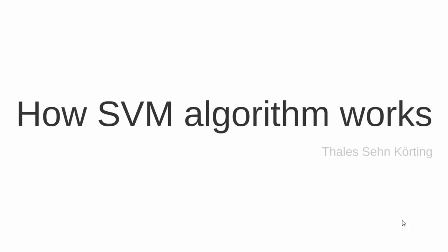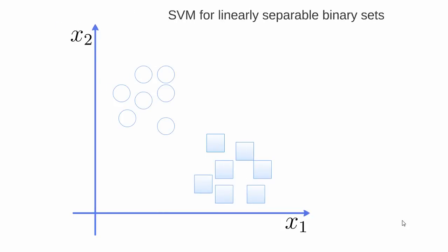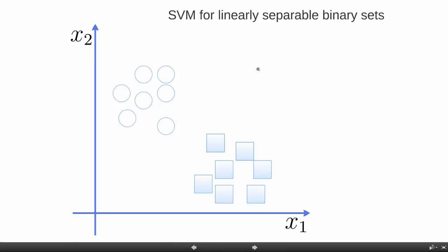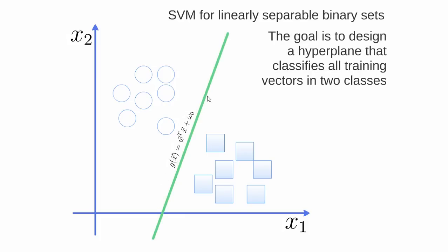Hello, I will explain how the SVM algorithm works. This video will explain the Support Vector Machine for linearly separable binary sets. Suppose we have two features X1 and X2, and we want to classify all these elements. We can see that we have the class square and the class circle. The goal of the SVM is to design a hyperplane — here we define this green line as the hyperplane that classifies all training vectors into two classes.